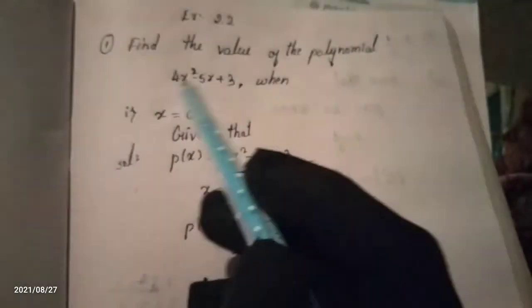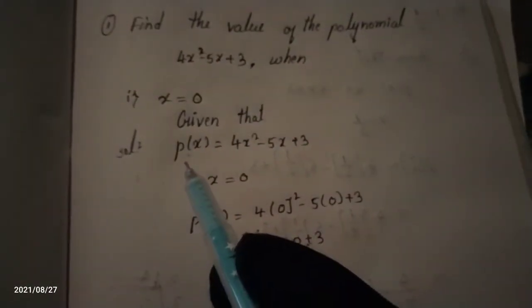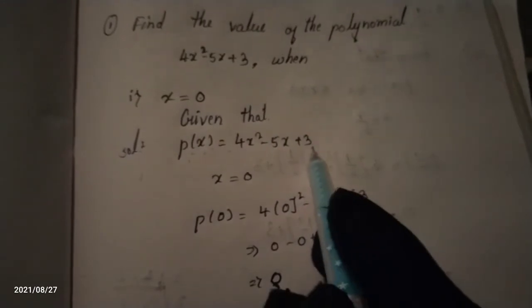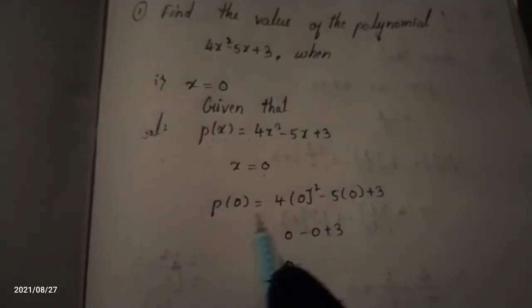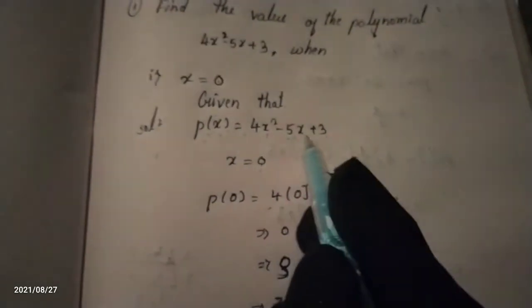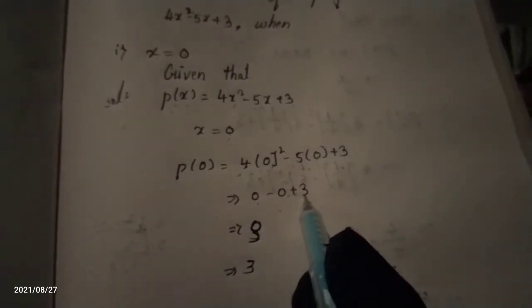For x = 0: write p(x) = 4x² - 5x + 3. Substituting x = 0, we get p(0) = 4(0)² - 5(0) + 3. Since 4×0 = 0 and 5×0 = 0, we get 0 - 0 + 3 = 3. So when we substitute x = 0 in this polynomial, the answer is 3.